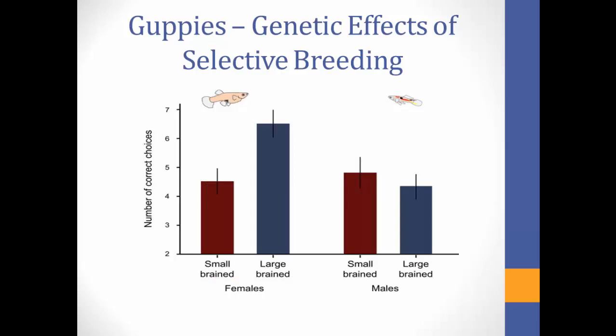In this experiment, they selected large and small brain guppies relative to brain size and tested cognitive ability by associating a specific number of symbols with food, testing whether guppies learned to discriminate between symbols. This figure displays the small and large brain females and males relative to the correct number of symbols each sex chose. The results show that large brain females outperformed small brain females in the learning task, but large and small brain males showed no differences in cognitive ability. This interaction provided direct evidence for a positive association between relative brain size and cognitive ability.